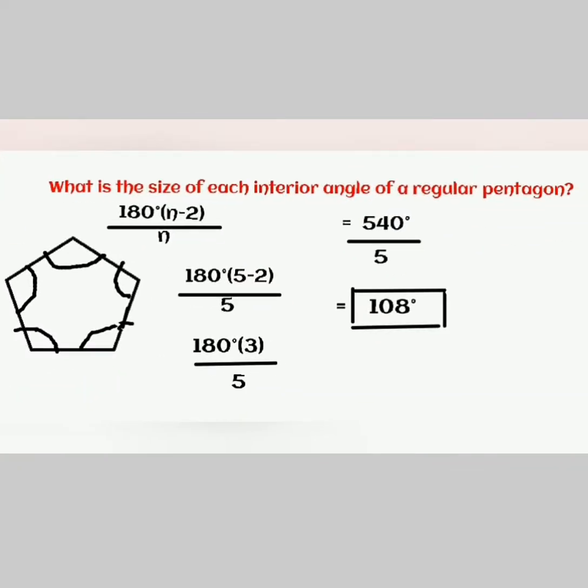For example, what is the size of each interior angle of a regular pentagon? We know that a pentagon has 5 sides. So, we would multiply 180 degrees times 5 minus 2 divided by 5. And that would give us 180 degrees times 3, which is 540 degrees. And then we divide that by 5, and our answer is 108 degrees.